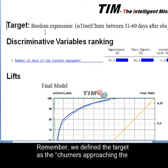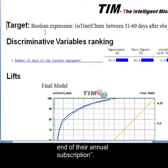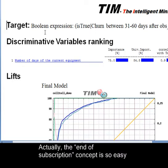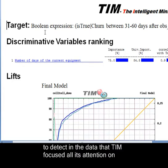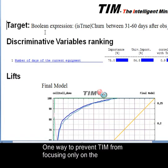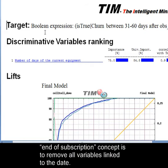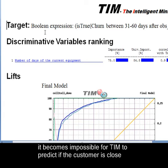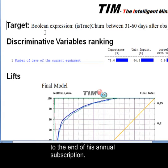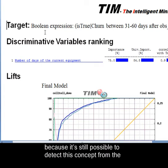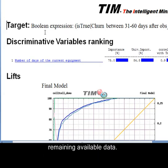Remember, we defined the target as the churners approaching the end of their annual subscription. What happened to the churner part of the target? Actually, the end of subscription concept is so easy to detect in the data that TIM focused all its attention on detecting this concept, neglecting the churner concept. One way to prevent TIM from focusing only on the end of subscription concept is to remove all variables linked to the date. Since the date is no longer available in the data, it becomes impossible for TIM to predict if the customer is close to the end of his annual subscription. This way, TIM will focus on the commercial churn concept because it is still possible to detect this concept from the remaining available data.